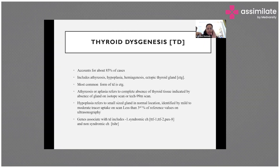Thyroid dysgenesis is the most common permanent cause of congenital hypothyroidism, accounting for 85% of cases. It includes athyreosis — complete agenesis of the thyroid gland — hypoplasia where the gland is very small and undeveloped, hemiagenesis where only one half of the gland is present, and ectopic thyroid gland where it is not in its normal anatomical position.